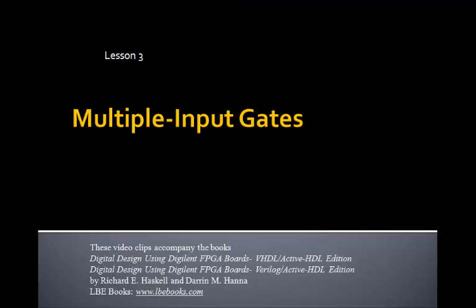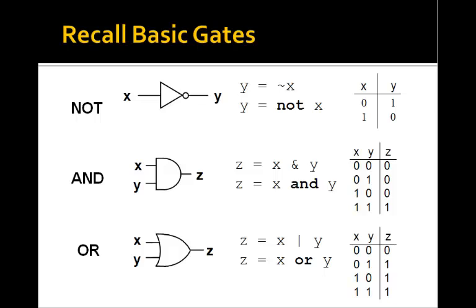This is Lesson 3 on Multiple Input Gates. Let's recall the basic gates from Lessons 1 and 2. The NOT gate, the AND gate — whose output is 1 only if both inputs are 1 — and the OR gate, in which the output is 0 only if both inputs are 0. The AND and OR gates, as well as the NAND and NOR, and exclusive OR and exclusive NOR gates, can also have multiple inputs, more than 2.